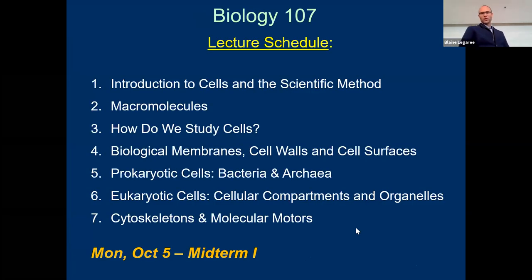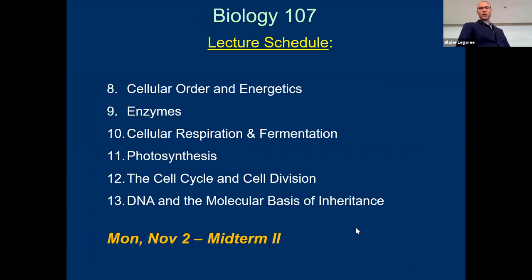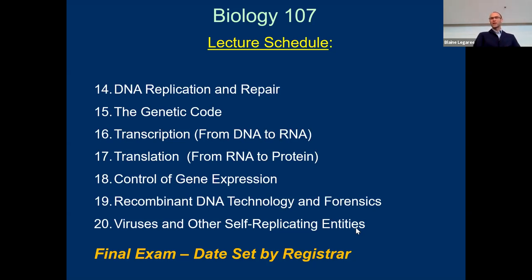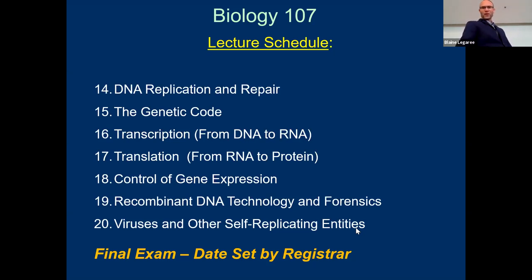This is what the lecture schedule looks like. The first part of the course we'll cover the bits and pieces of cells and how we study them — things like microscopy — then we'll have our midterm. The second part covers respiration, photosynthesis, mitosis, and meiosis, followed by a second midterm. The last part deals with information: DNA, RNA, proteins, how it's regulated. At the end we have bonus units on biotechnology and viruses — I can't wait to talk about viruses!